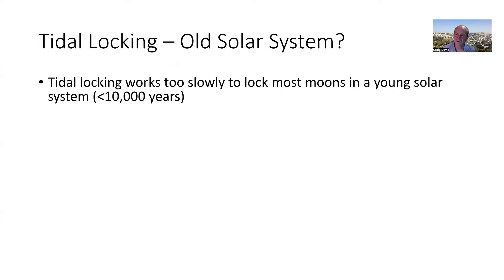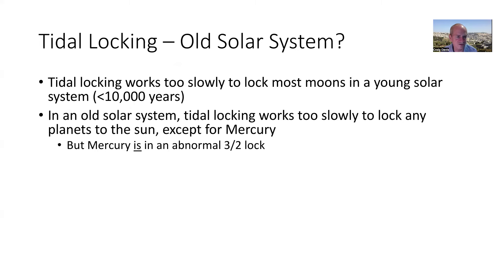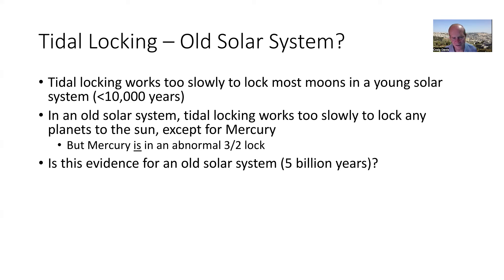Here's where young Earth creationists have some explaining to do: tidal locking works too slowly to lock most moons in a young solar system of less than 10,000 years. In an old solar system, tidal locking works too slowly to lock any planets to the sun except Mercury. An old solar system does have enough time to lock the inner regular moons and Mercury, so that could be considered an argument for an old solar system.